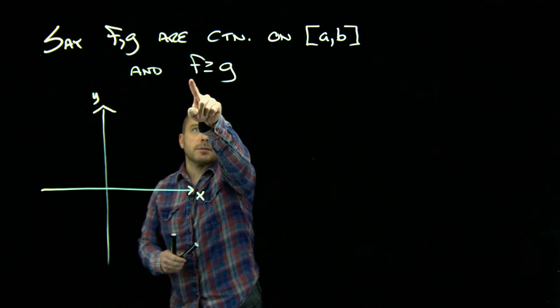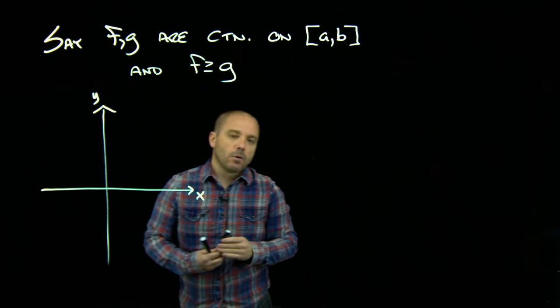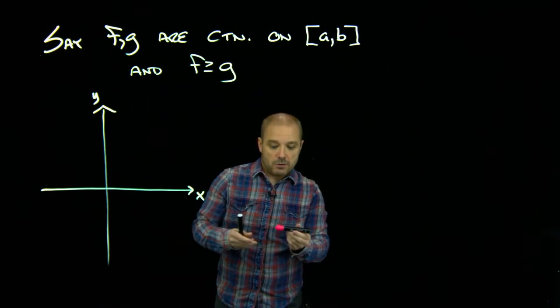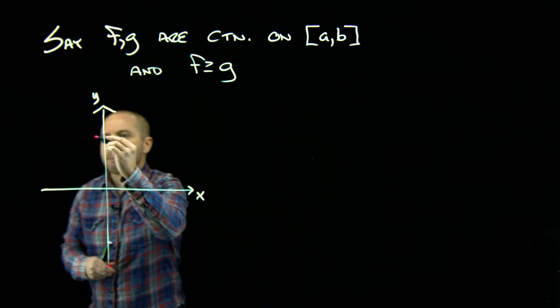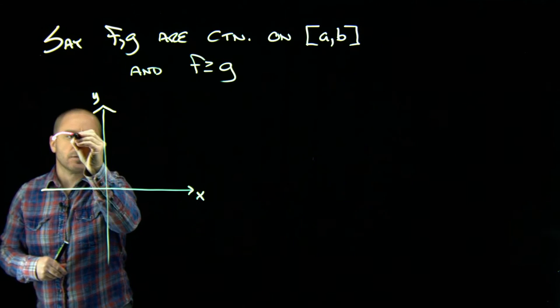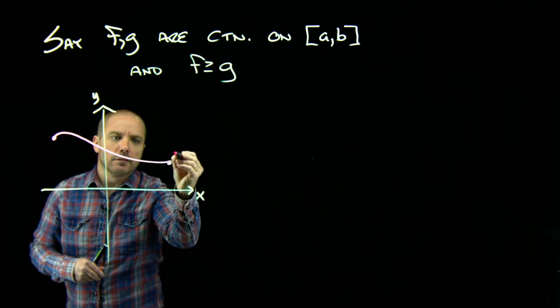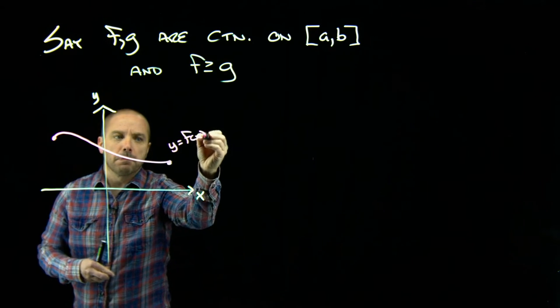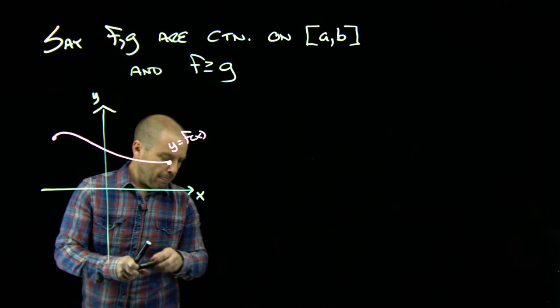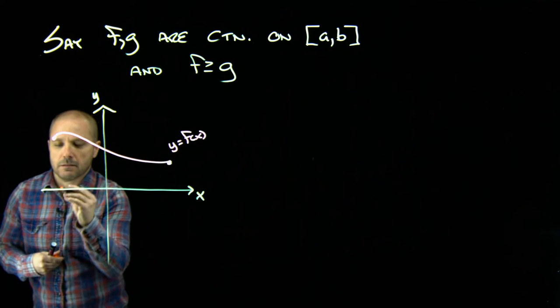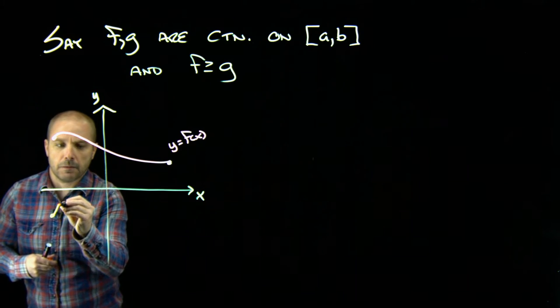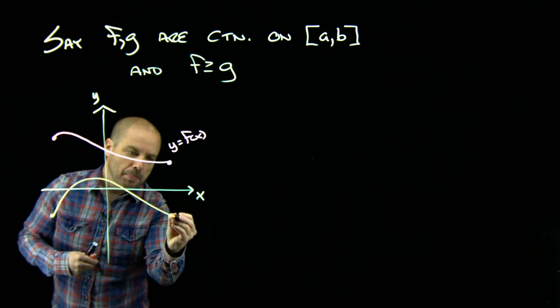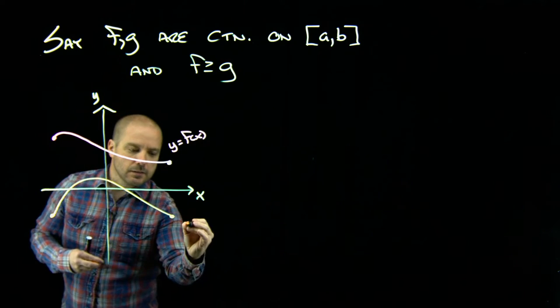The key is I want to make them continuous and I want f and g such that f is always greater than or equal to g. So I'll draw some curve f and say this is g.